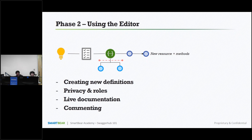For phase two, we're going to create a new API design. We're going to take a look at how we can use those teams we've created and set read/write permissions based on their role. We're going to look at the live documentation — so as we're working on our Swagger document, we can see in real time any errors that pop up and the methods and parameters, inputs and outputs being populated in that documentation in real time. We're also going to talk about commenting — how we can make comments and send off notifications in a really meaningful way for further collaboration.